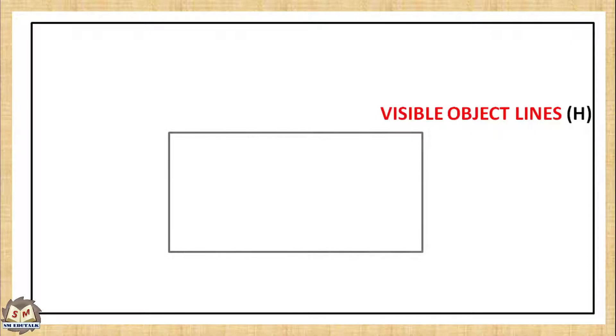The front view of the rectangular prism is a rectangle. This is visible. Hence, the visible object lines are drawn by continuous thick lines with H grade pencil.